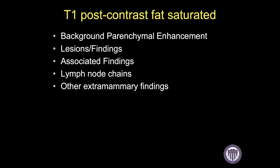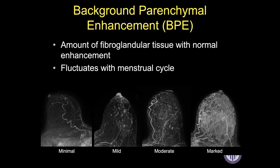I then spend most of my time on the post-contrast source images, where I determine the amount of background parenchymal enhancement, or BPE. I find unique lesions that stand out and correlate these with the sagittal and coronal images. I also look for associated findings, evaluate lymph node chains, and assess extramammary findings. BPE is the normal enhancement of fibroglandular tissue — it is physiologic and fluctuates with the menstrual cycle.